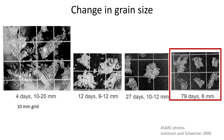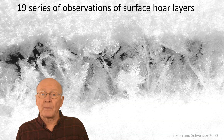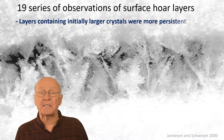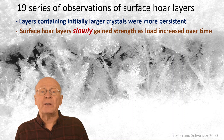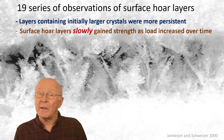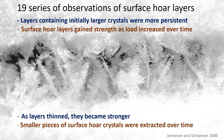But this is just how one layer of surface oar changed over time. Let's look at the trends ASARC researchers observed in 19 layers of surface oar in the Columbia Mountains. Over periods of 5 to 14 weeks, they found layers containing initially larger crystals were more persistent. Surface oar layers gradually gained strength as load increased over time, and when additional snowfall was slow — sometimes just dribs and drabs — the buried surface oar layers were quite slow to strengthen. Strengthening of layers was associated with thinning, and smaller pieces of surface oar crystals were extracted over time.